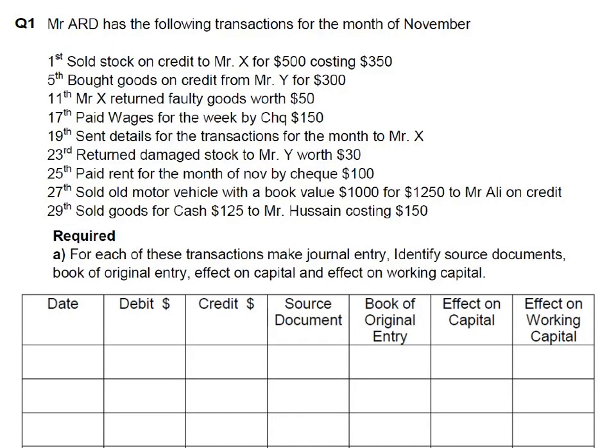Today we are covering a basics topic which includes double entry, day books, source documents, and similar things. This is basically tested in CAIE examination question number one. Although this question does not belong to exam past papers, it is made specially for students to revise the basic concepts of double entry.